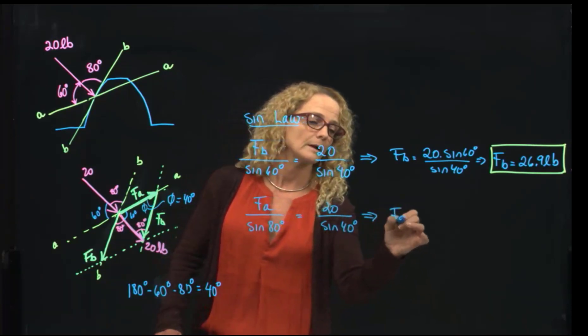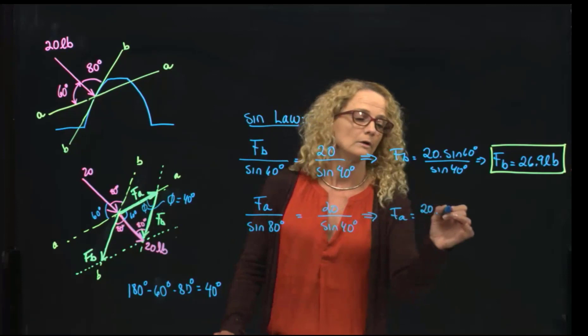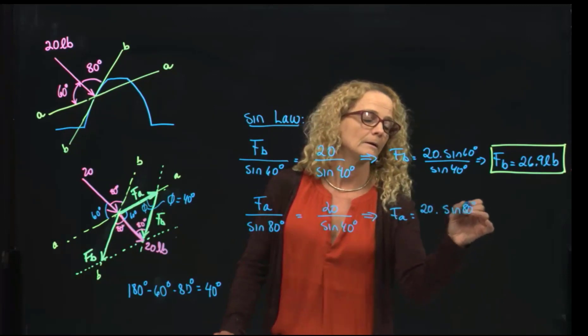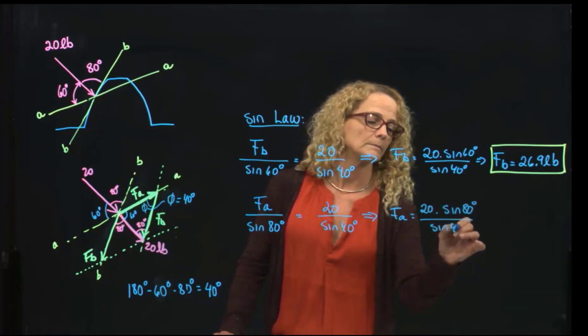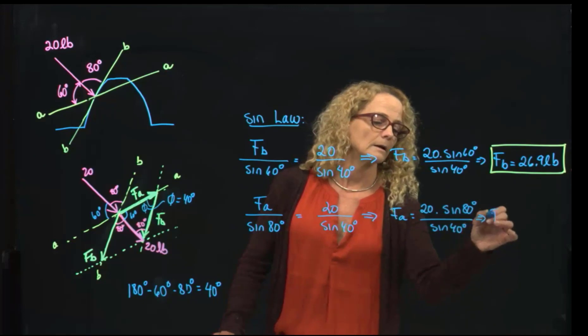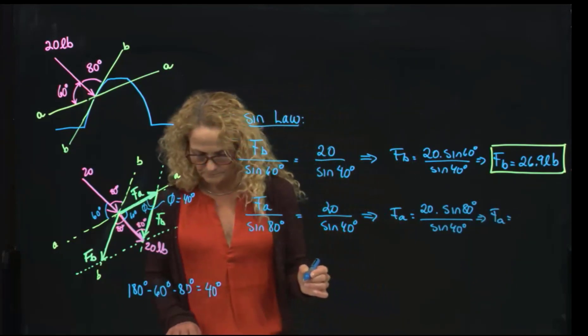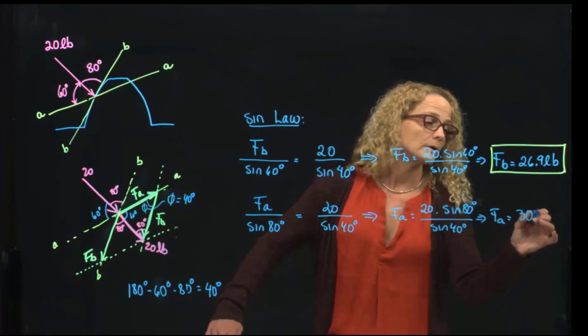That gives me FA is 20 times sine of 80 divided by sine of 40, and that equals 30.6 pounds.